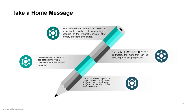To summarize the take-home messages: Near-infrared fluorescence is useful to understand early physiopathological changes of the lymphatic system after primary or secondary damage. The earlier lymphatic disease is treated, the more that can be done to prevent its progression. Near-infrared fluorescence can detect chylous or lymph leaks used in open or laparoscopic surgery. And in some cases, surgery can stabilize lymph circulation as a palliative treatment.